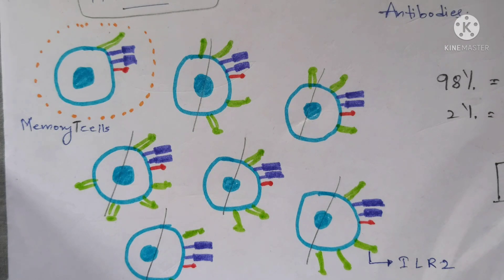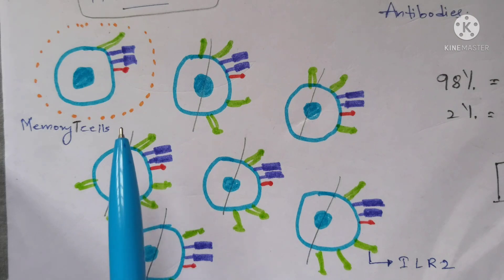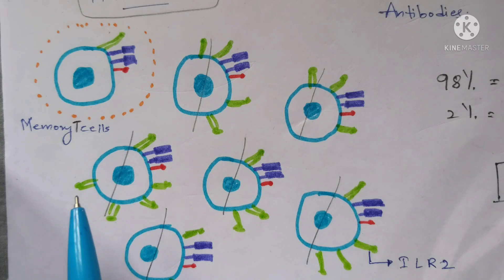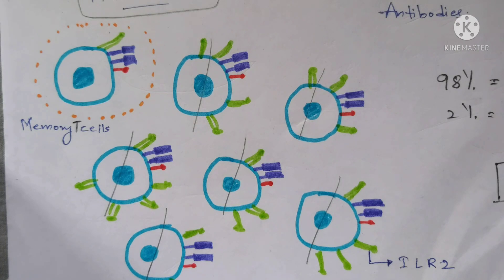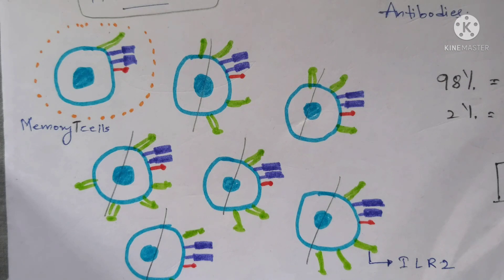One important point to remember is that memory B cells are not long-lasting — they are completely short-lasting. Whereas memory T cells are completely long-lasting. The memory T cells can easily interact with any type of pathogen that enters the body in order to kill them. This is how memory cells are generated in our body. If you like this video, subscribe to my channel and press the bell icon. Please comment any doubts in the comment section.